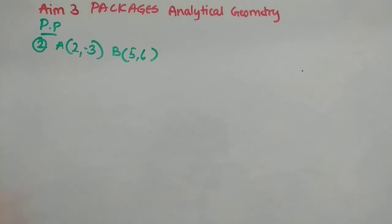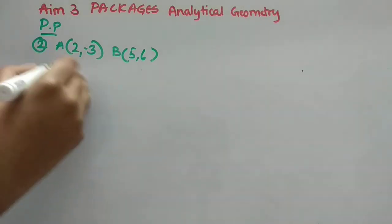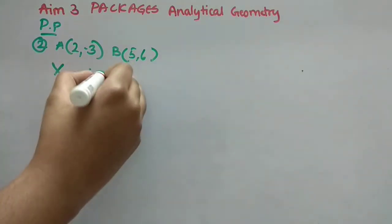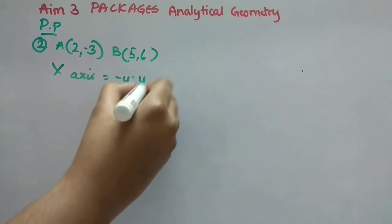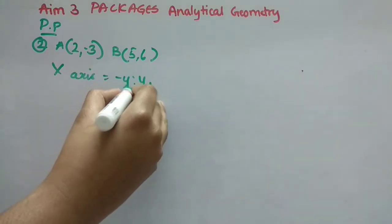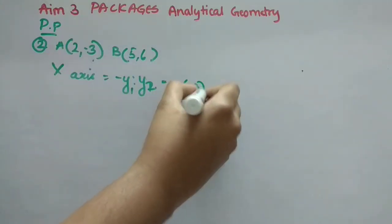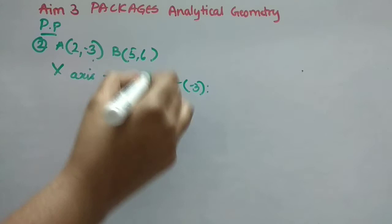In the second question, they have given us A is (2,3) and B is (5,6). We have to find the x-axis for it. So what is x-axis formula? Minus Y1 is 2 Y2, right? So what is Y1?